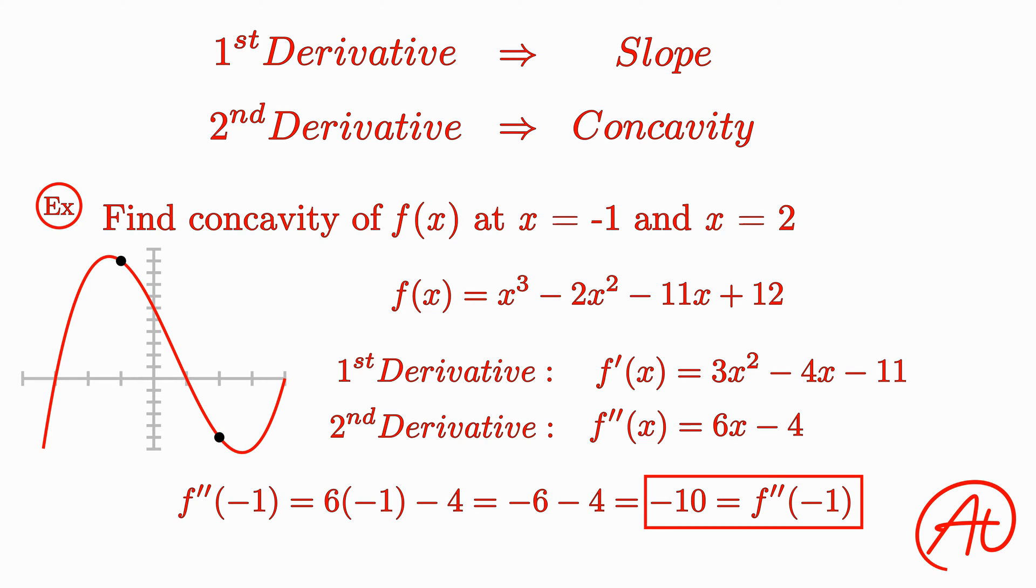Next, to find the concavity at x equals 2, we plug in 2 to get that the curve has a concavity of 8 at this point, which is positive, again as we expected.